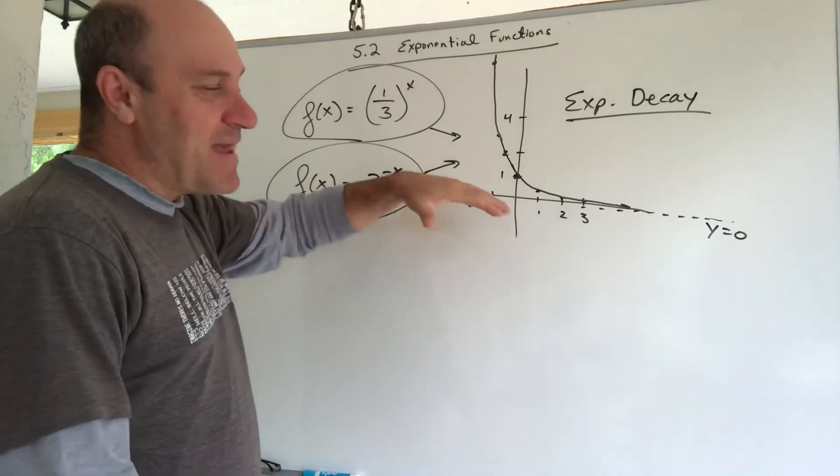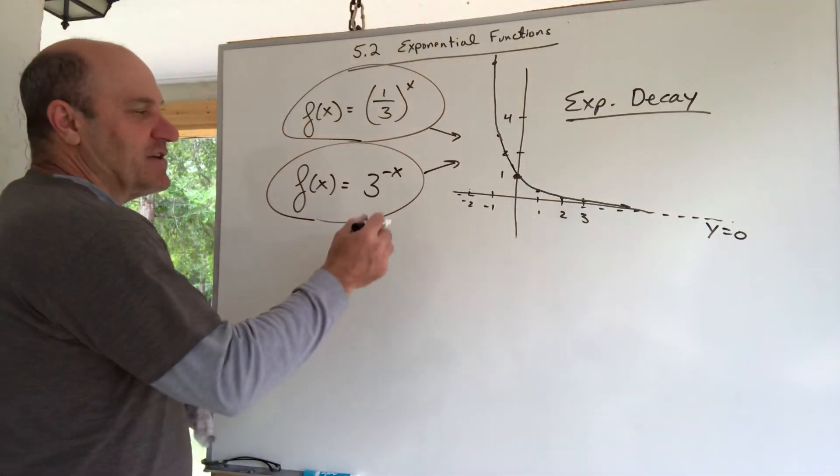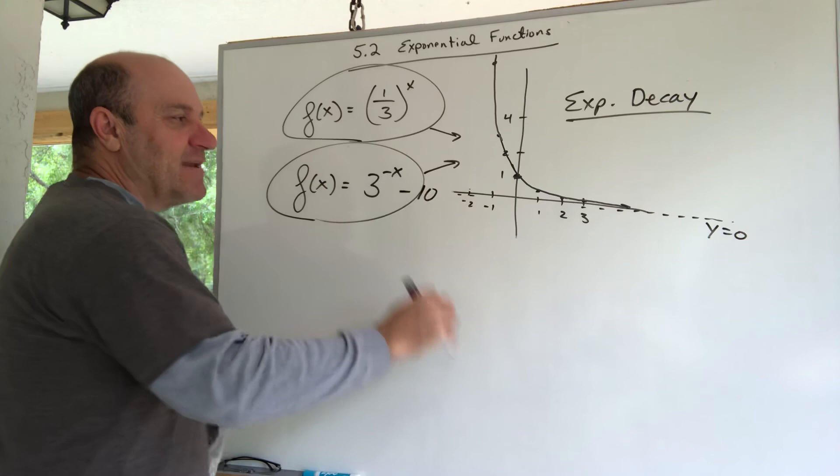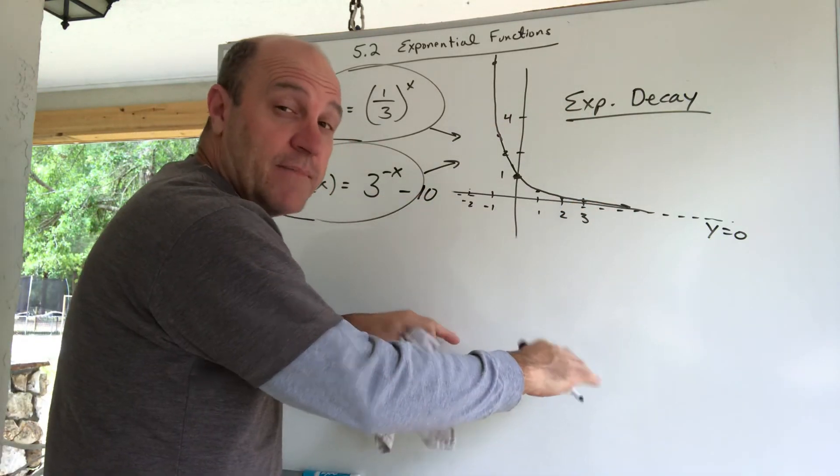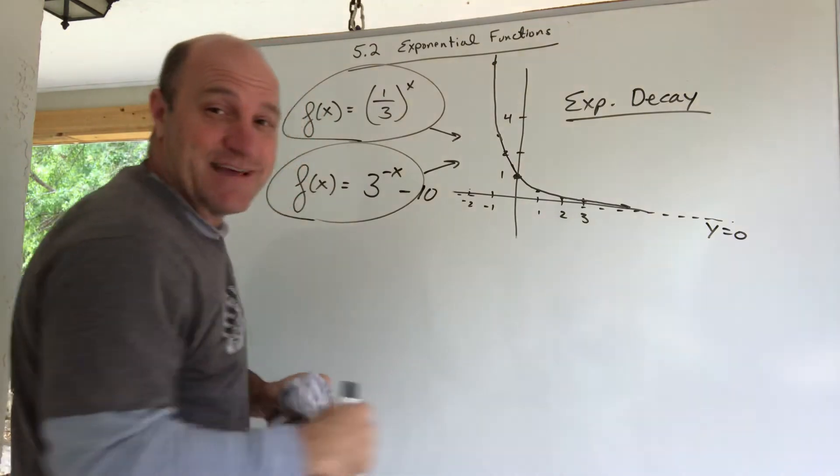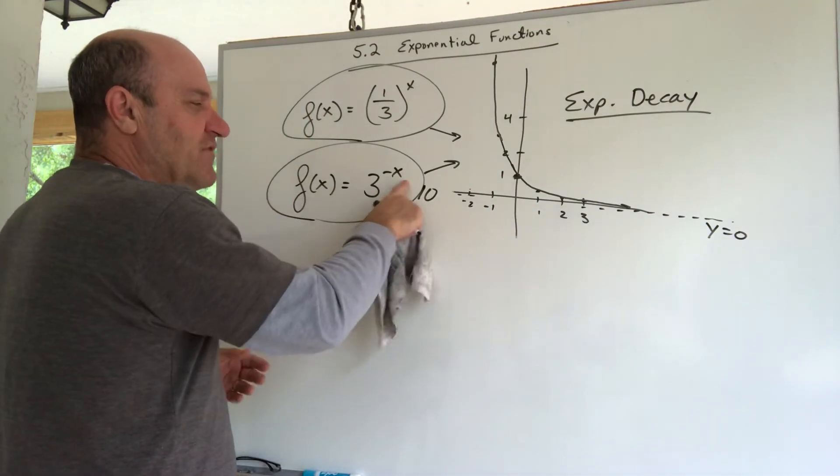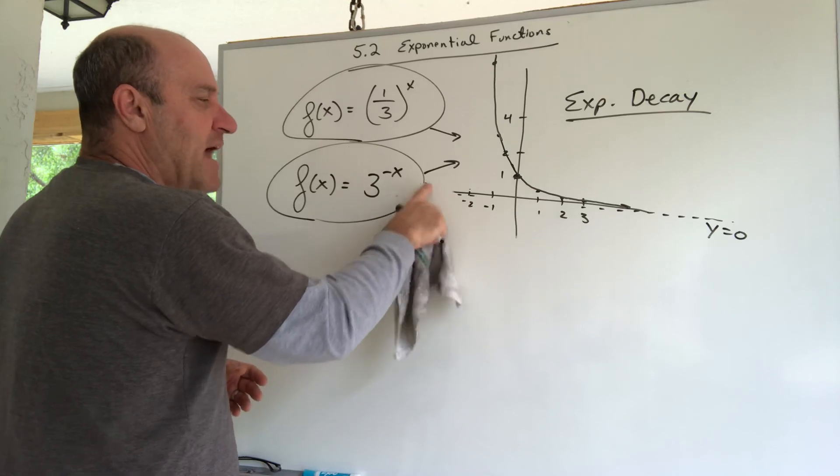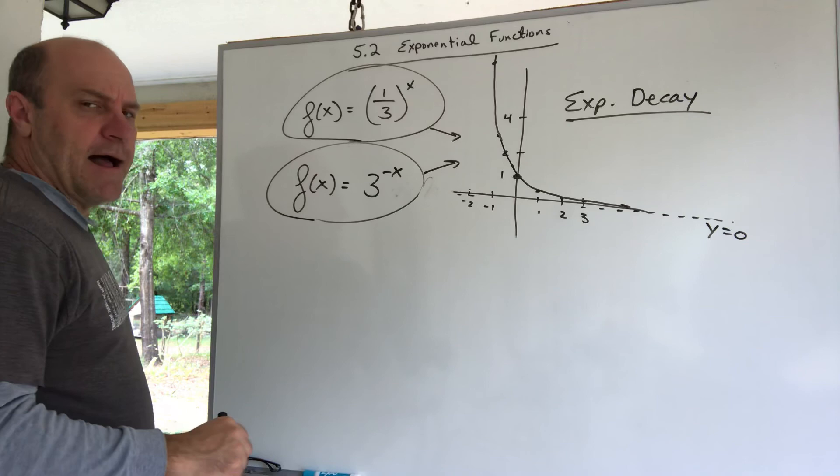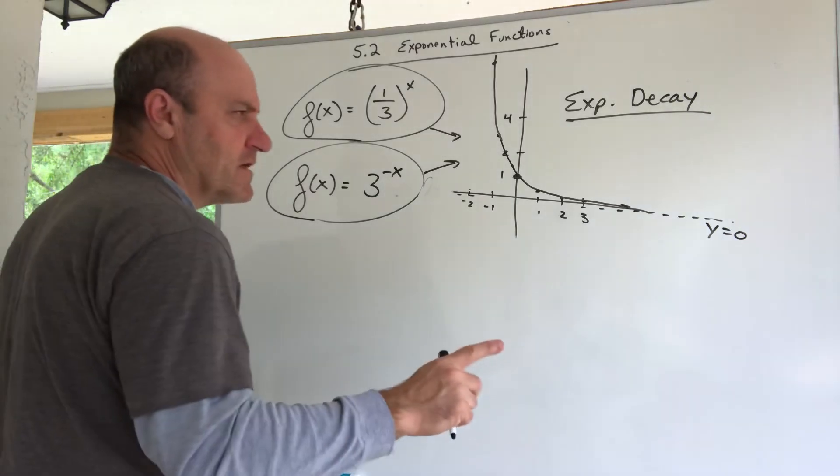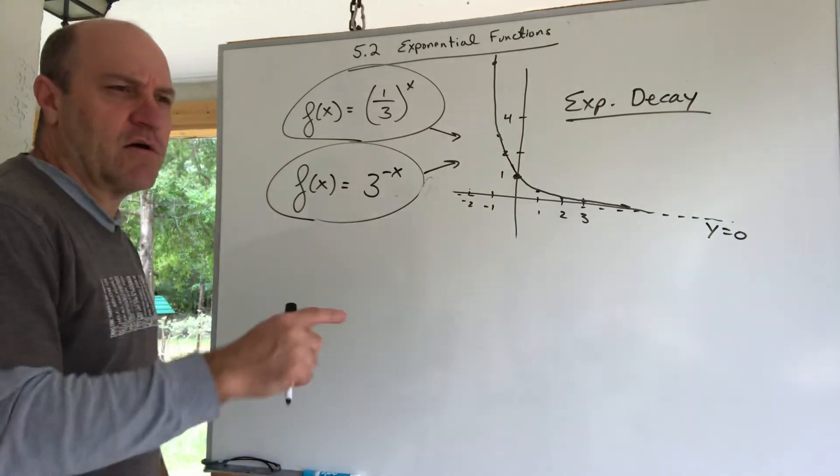Now, I can make it have an X intercept. I could shift this thing down. It's easy to shift something down. Subtract 10, the whole graph shifts down. The asymptote shifts down, and now you would have an X intercept. Let's not do that right now. But watch out for shifting. You can shift the graphs up and down, and we learned about that before in this class. There's a lot more to say here in 5-2 about exponential functions. I'm going to hit pause and then I'll come back here.